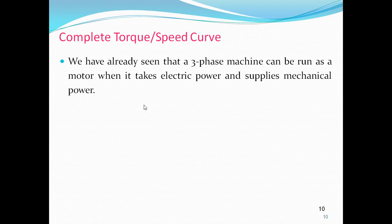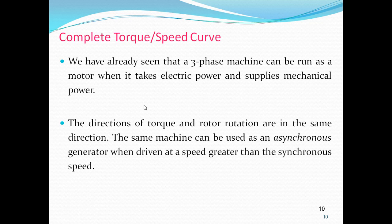For the complete torque-speed curve: a three-phase induction machine can be run as a motor when it takes electrical power and supplies mechanical power — the direction of torque and rotor rotation are in the same direction. The same machine can also be used as an asynchronous generator when driven at a speed greater than synchronous speed.